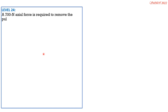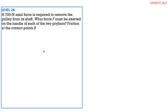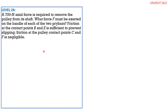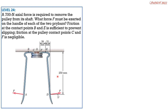A 700 N axial force is required to remove the pulley from each shaft. What force F must be exerted on the handle of each of the two pry bars? Friction at contact points B and E is sufficient to prevent slipping; friction at pulley contact points C and F is negligible. Since we analyze one pry bar, it carries half of 700 N = 350 N. At E there is friction resistance; at F there is no friction, so the reaction at E is inclined as shown.